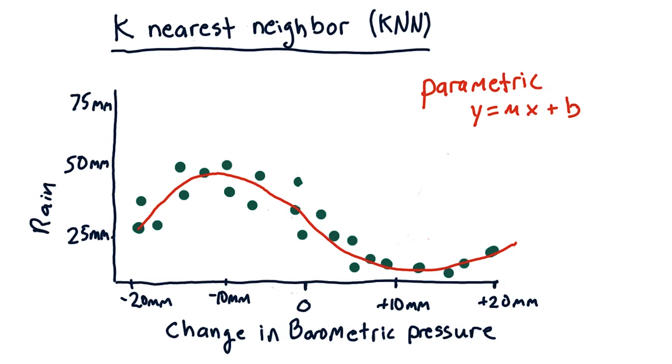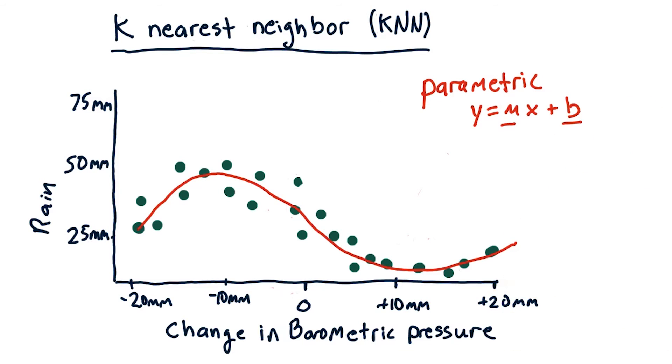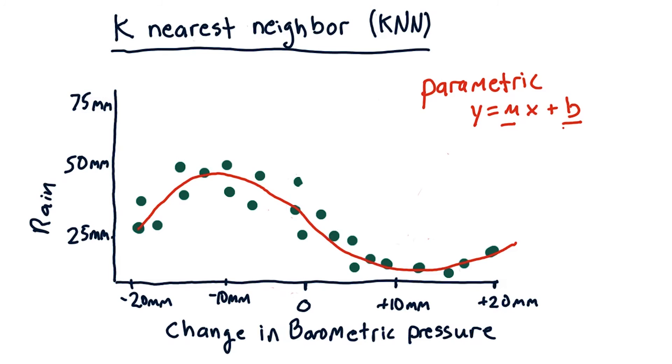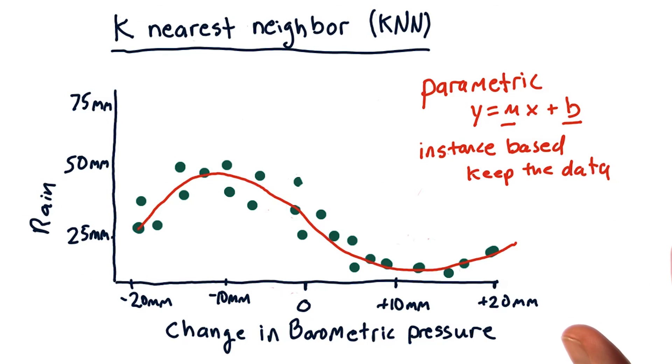We've covered now parametric models where our goal is to find parameters like m and b, and we toss the data away and then just use m and b later to make our queries. And here I've shown you non-parametric or instance-based methods, where we keep the data and we consult it when we make a query.